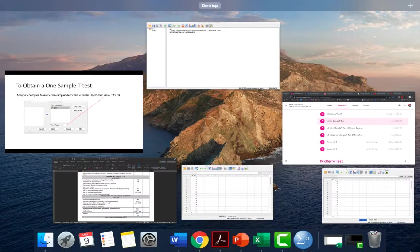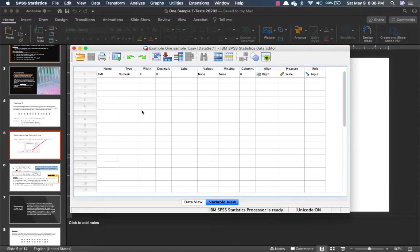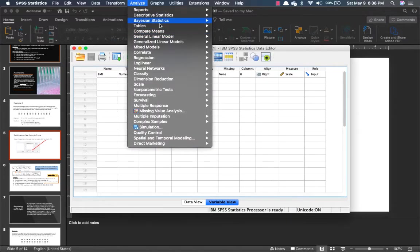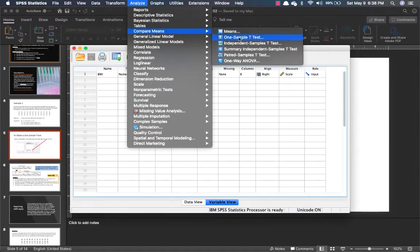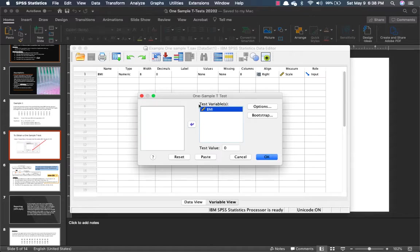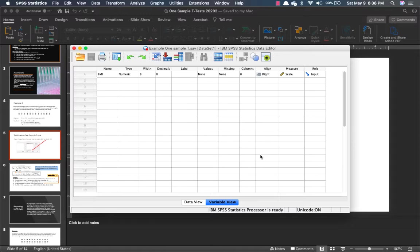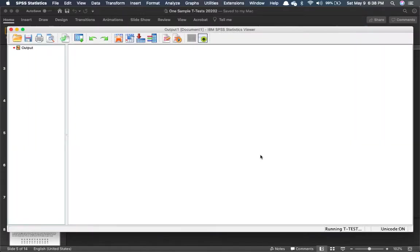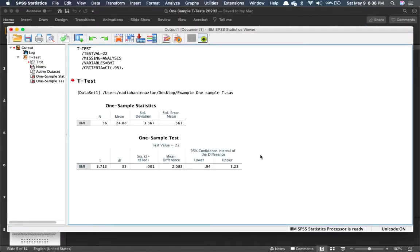So this is how you obtain a one-sample t-test. We go to analyze, go to compare means, one-sample t-test, and then just click the test variable, and then the test value we want to test if it's 22 or not, click on OK, and then wait for the results. So there you go, we have our one-sample t-statistics and one-sample t-test value.